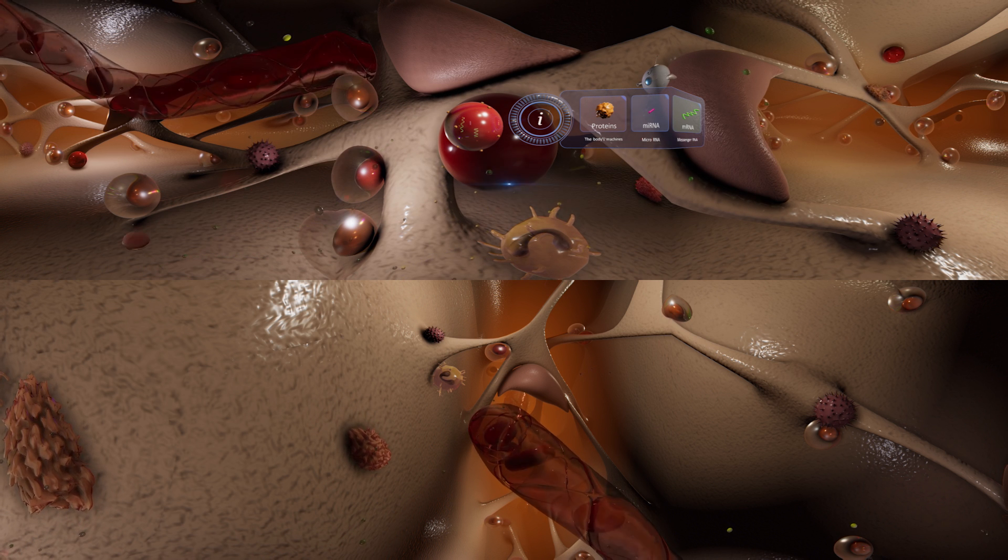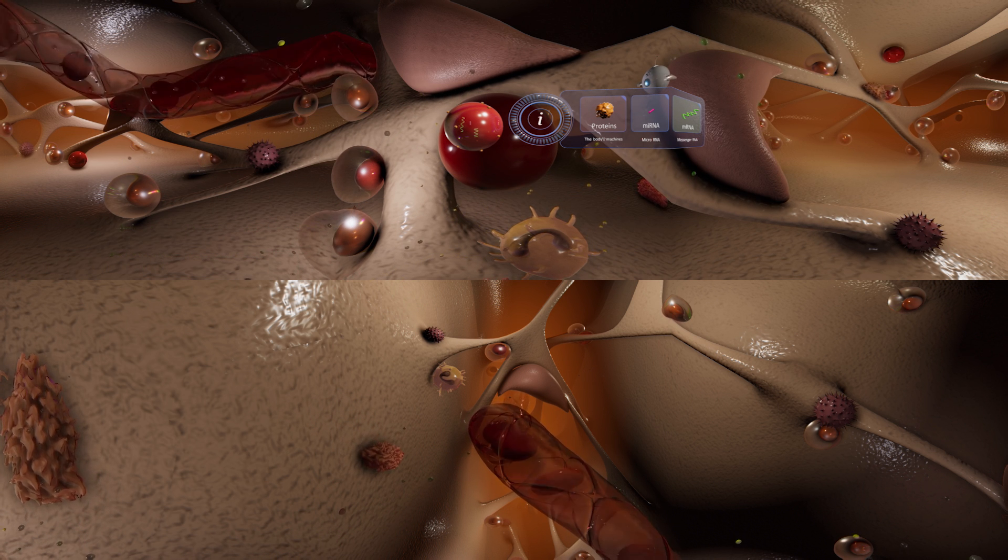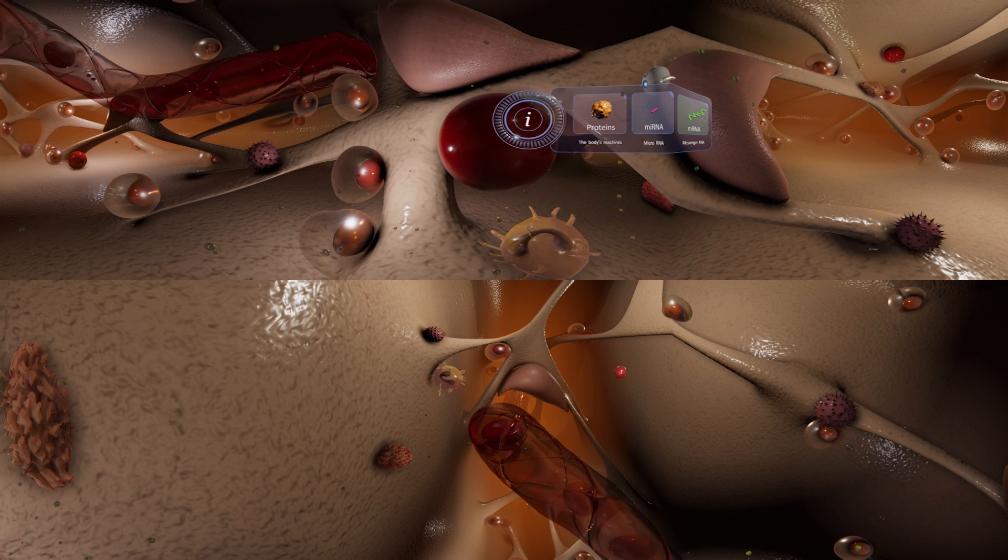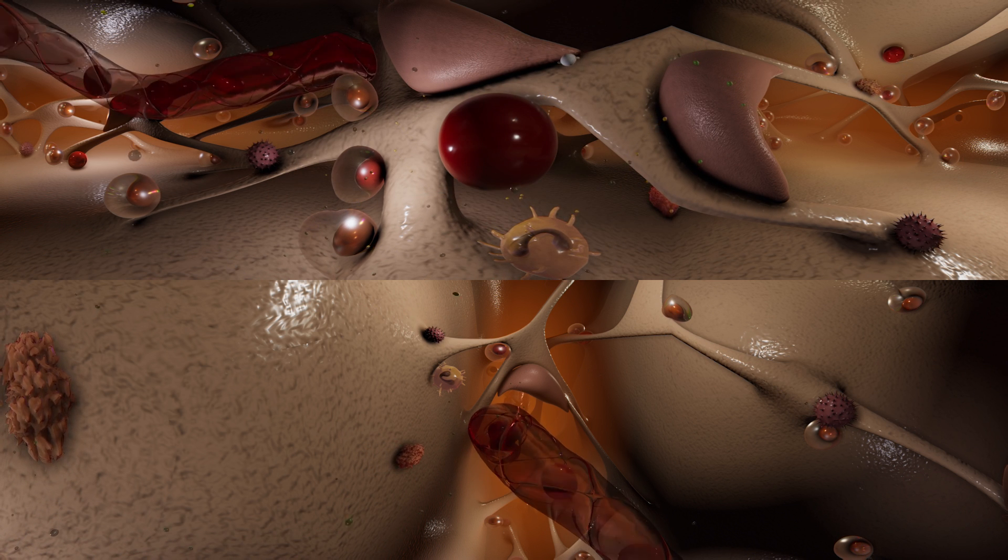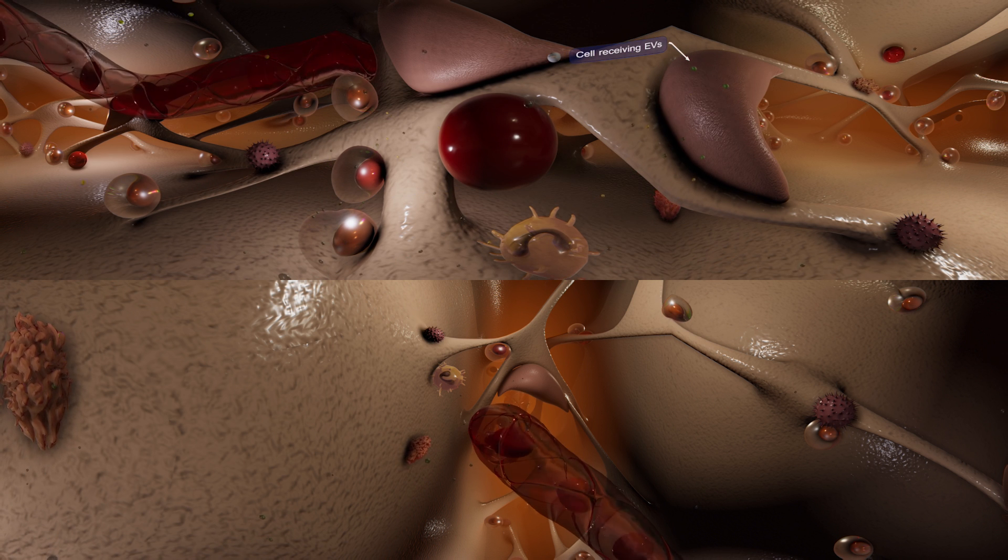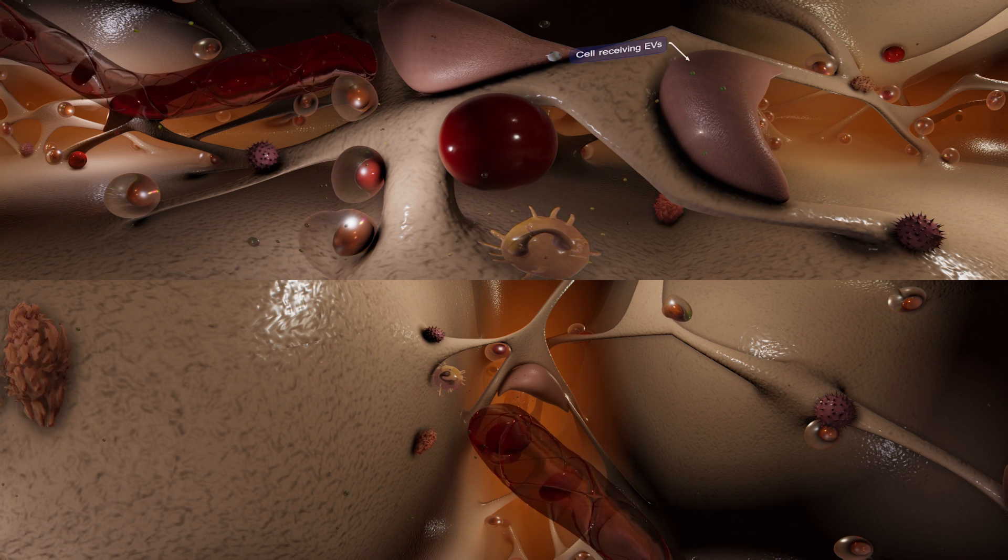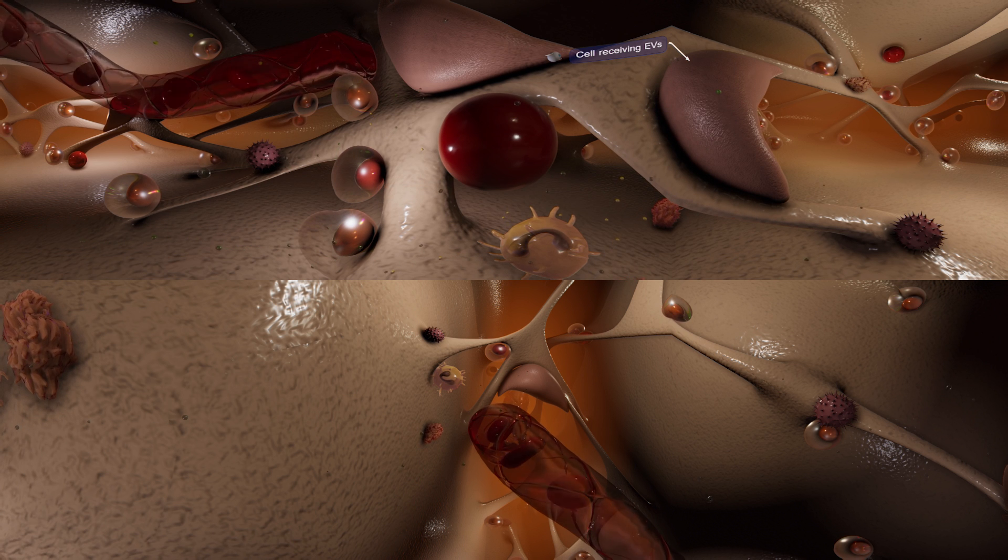This cargo can be used by the recipient cell, leading to changes in the cell's function. EVs that reach other cells can bind to and signal through protein receptors on the cell surface. They can also fuse with the cell surface or enter the cell to deliver their cargo.